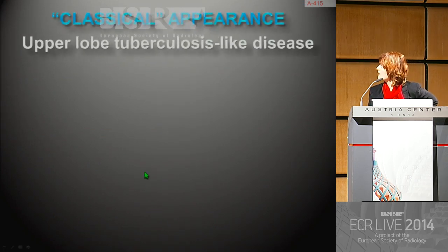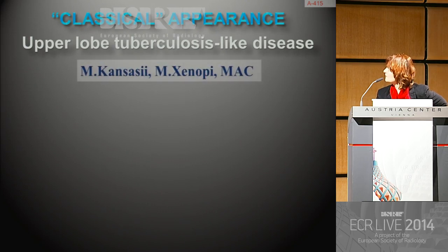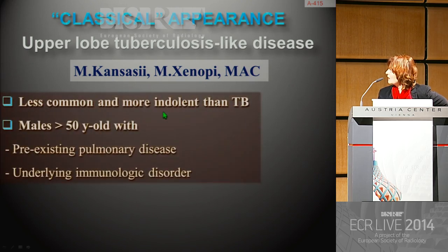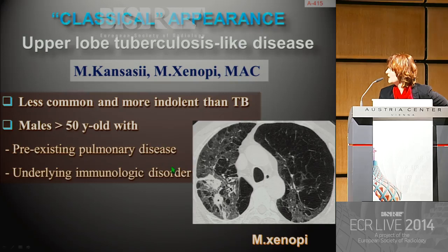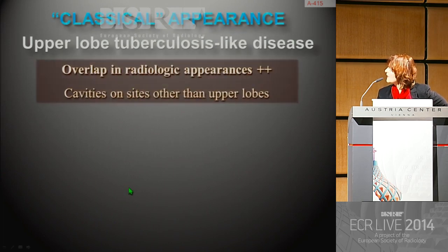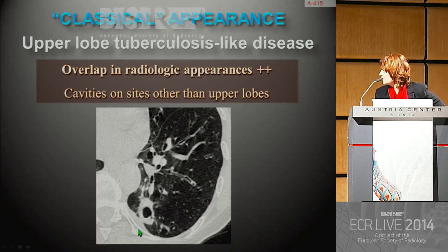The first form is the classical appearance and may simulate upper lobe tuberculosis. It is seen mainly secondary to Mycobacterium kansasii and Mycobacterium avium complex. It is less common and more indolent than tuberculosis, and mainly concerns males over 50 years old with pre-existing pulmonary disease, especially COPD, but also bronchiectasis, prior tuberculosis, or underlying immunologic disorders including diabetes, gastrectomy, or neoplasia. This classical appearance may be difficult to differentiate from TB due to great overlap in radiologic appearances; however, cavities sited other than the upper lobe should suggest a diagnosis, as seen here with a cavity at the posterior segment of the lower lobe.